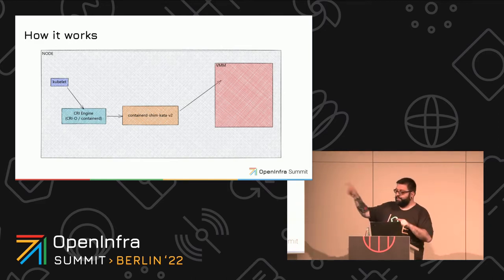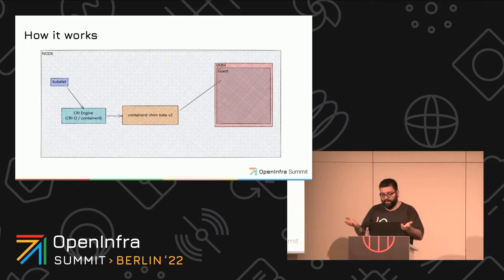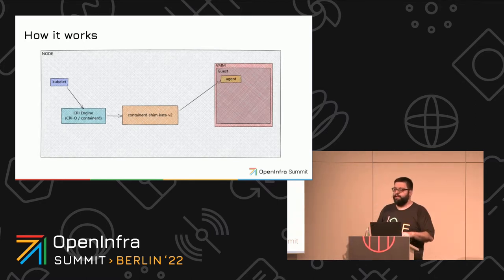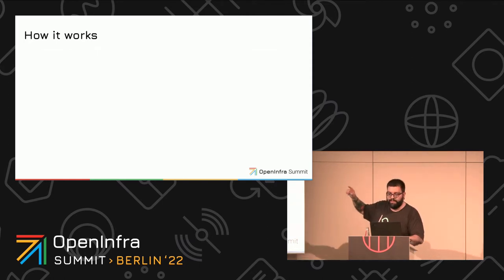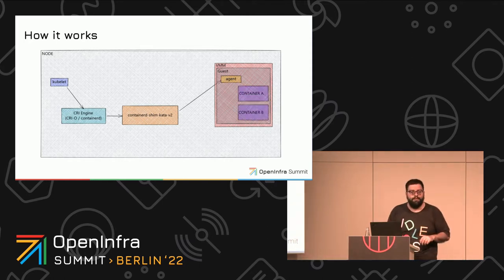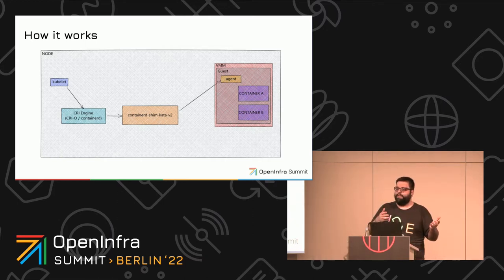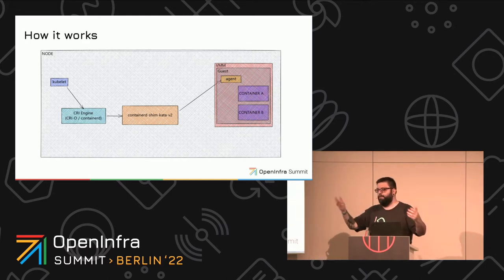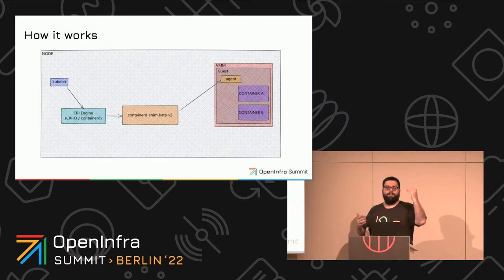The Kata runtime starts the VMM process, which brings the guest up. Inside the guest we have an init process — the agent — which is responsible for the lifetime of the containers. You have to share content between the host and the guest: the container rootfs, and if you are mounting volumes, those have to be shared between host and guest.